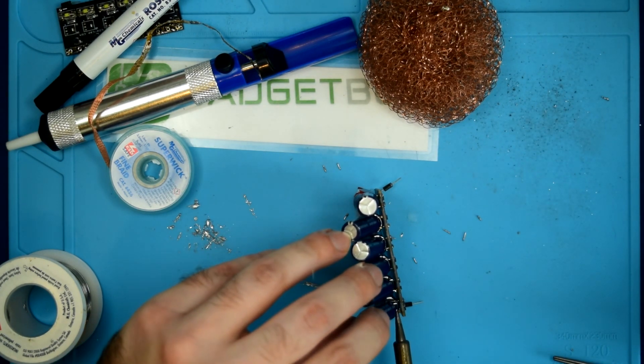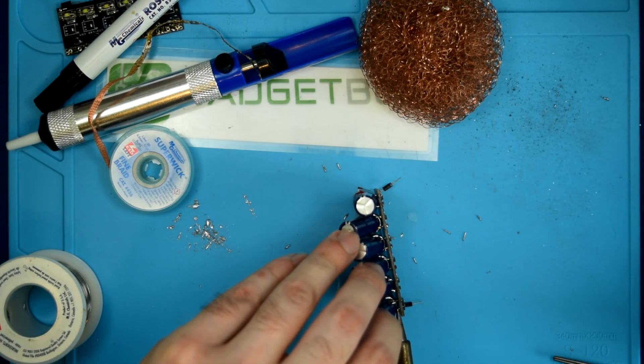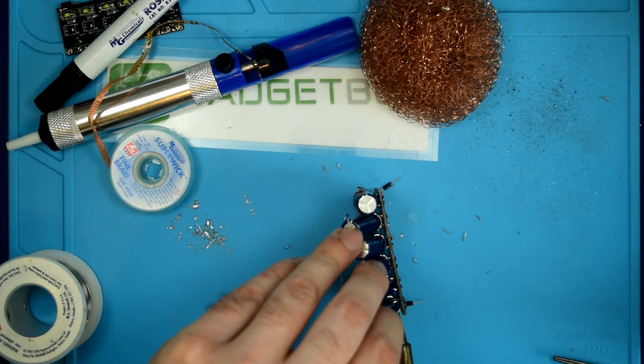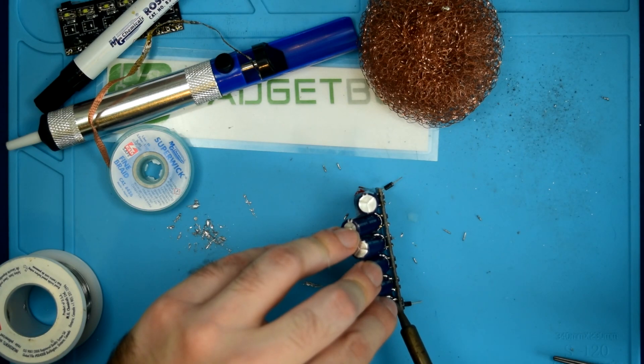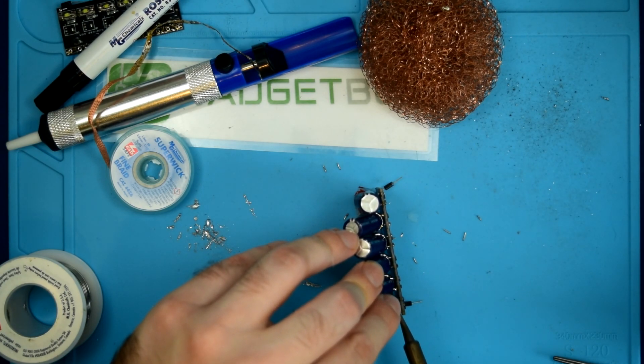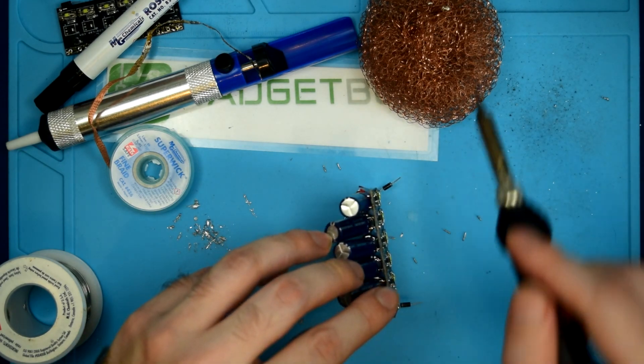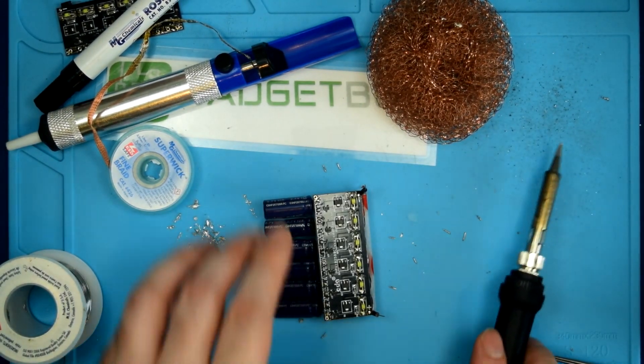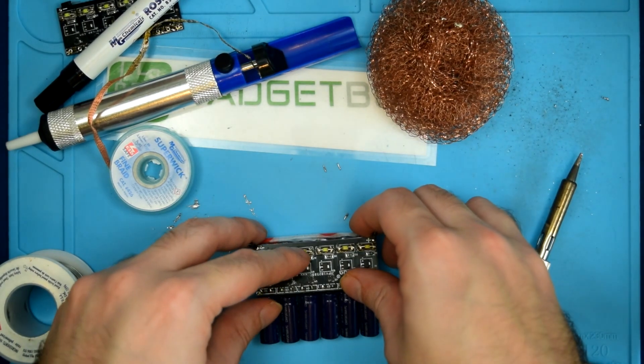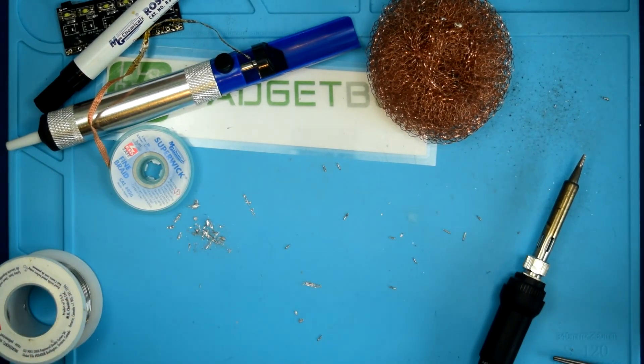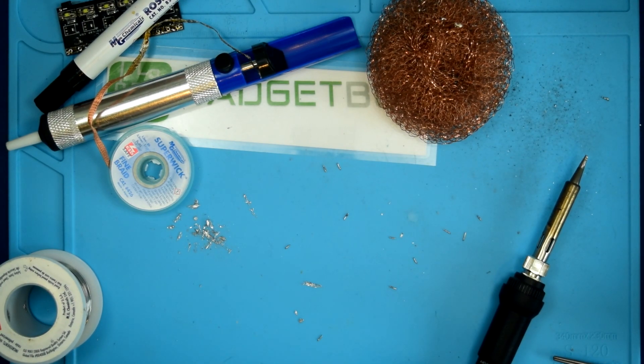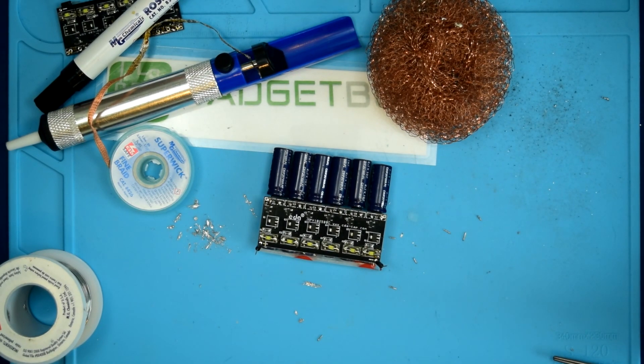So the way I've now configured this, it'll take twice as long to charge, but it'll hold twice as much energy. Alright, so I think we can now shut off the soldering iron. Let's flatten these caps out a little bit, there we go. Looks fairly good. Let's see if it'll charge up.